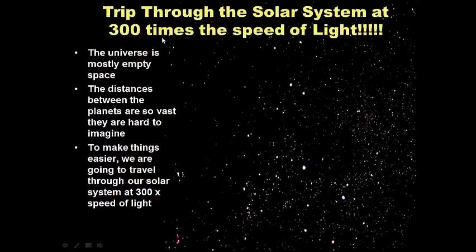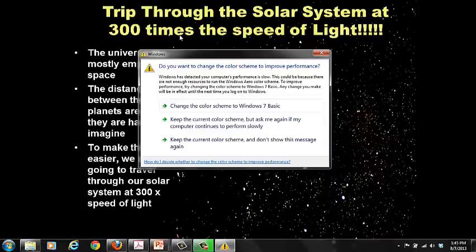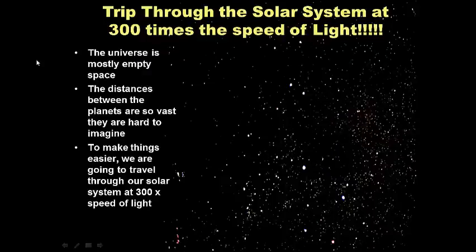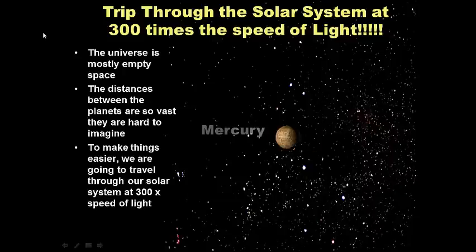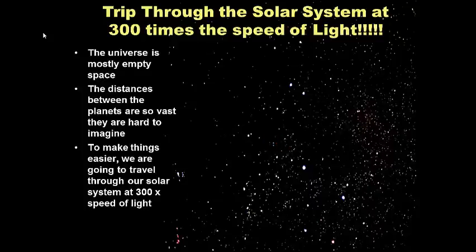We're going to take a trip through the solar system at 300 times the speed of light. The universe is mostly empty space, and the distances between the planets are so vast they are hard to imagine. Traveling at 300 times the speed of light, the planets pass by in order: Mercury, Venus, Earth, Mars — the inner planets are close together and pass quickly. Out past Mars is Jupiter, but the distances between the planets get very, very big.